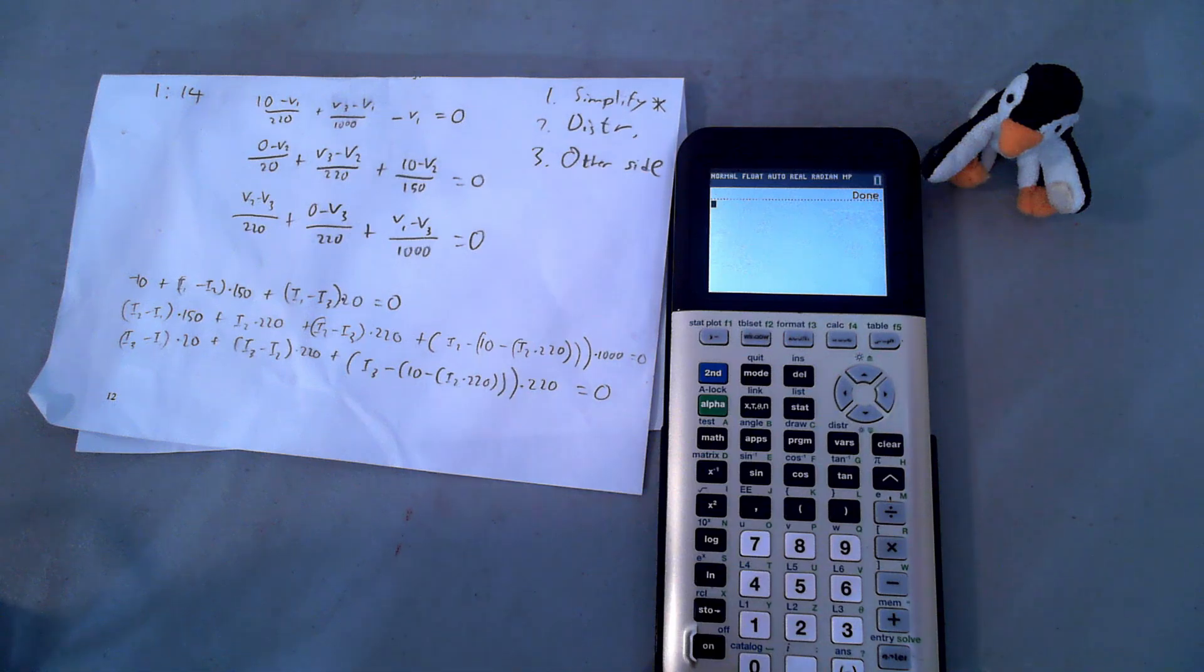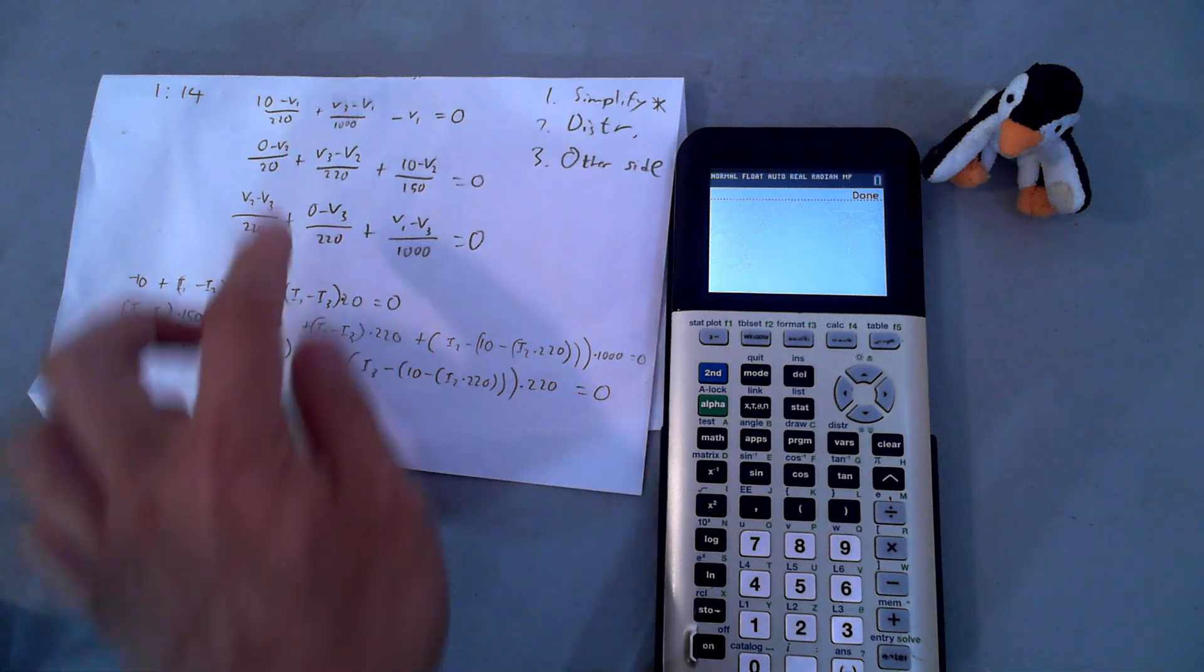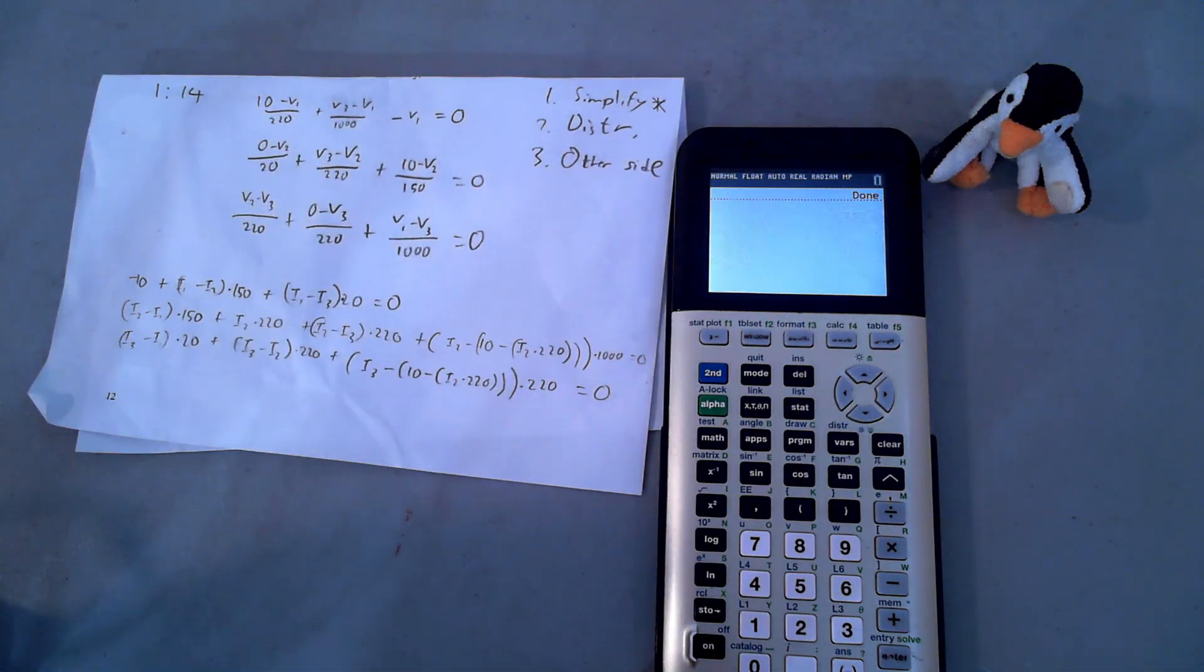So let's go ahead and type in this expression into the calculator. Right away, we bump into a problem because there are no subscripts in the calculator. So instead, for V1, we're going to type in A, and for V2, we're going to type in B, and so on and so forth. Same thing goes on for the currents, I2, I1, and I3. We're just going to go ahead and follow that convention.